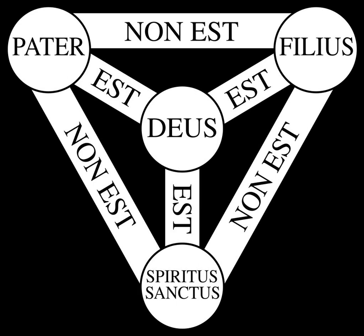The Shield of the Trinity, or Scutum Fidei, is a traditional Christian visual symbol which expresses many aspects of the doctrine of the Trinity, summarizing the first part of the Athanasian Creed in a compact diagram. In late medieval England and France, this emblem was considered to be the heraldic arms of God.